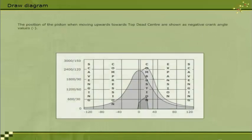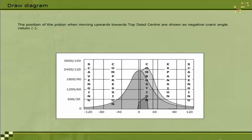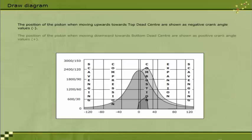The position of the piston when moving upwards towards top dead centre are shown as negative crank angle values (minus). The position of the piston when moving downward towards bottom dead centre are shown as positive crank angle values (plus).